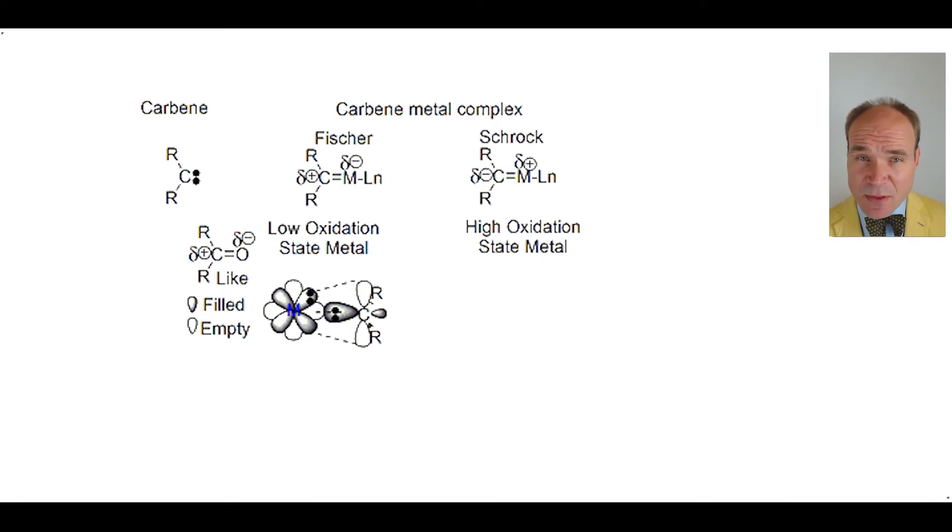Again, there's a double bond, but this time it's from the triplet state of the carbene where a single electron in an sp2 orbital interacts with a single electron in a metal d-orbital to give a bond. And there's also a single electron in a carbene p-orbital that interacts with a single electron in another d-orbital of the metal.